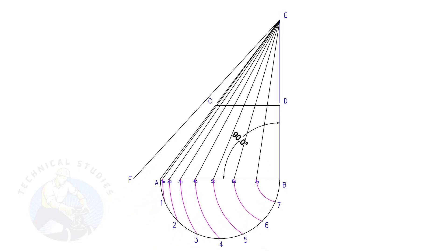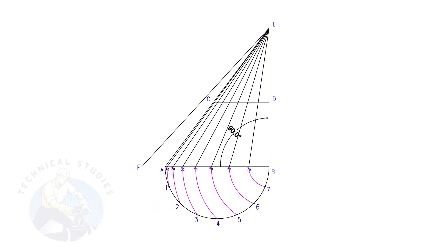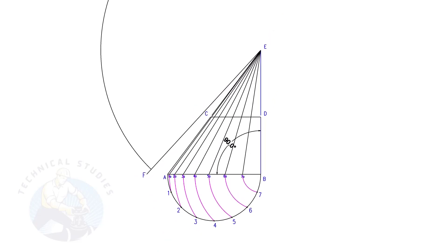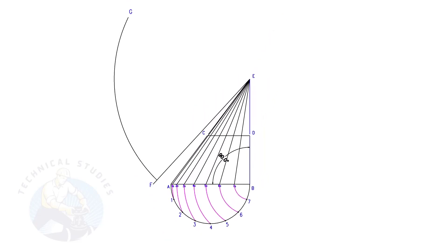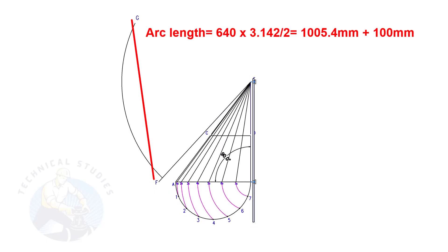Draw line EF. This is a reference line only. Draw arc FG, the length shall be a little more than the half circumference of the bottom diameter. Again, this arc is only for a reference of the half circumference length.